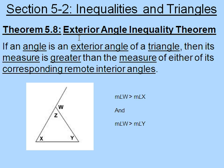Theorem 5.8 says it's the exterior angle inequality theorem. And it states, if an angle is an exterior angle of a triangle, then its measure is greater than the measure of either of its corresponding remote interior angles.